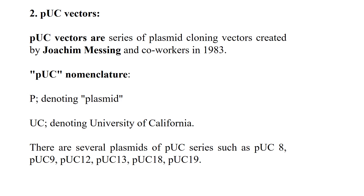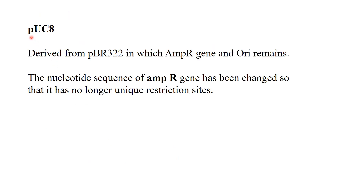These pUC series vectors share a basic structure but may differ in copy number, antibiotic resistance genes, or marker genes. pUC8 is the most important vector in this series and was derived from pBR322. In pUC8, the ampicillin resistance gene and the origin of replication from pBR322 were retained, while other components were removed. The nucleotide sequence of the ampicillin resistance gene has been modified so that it no longer contains unique restriction sites.